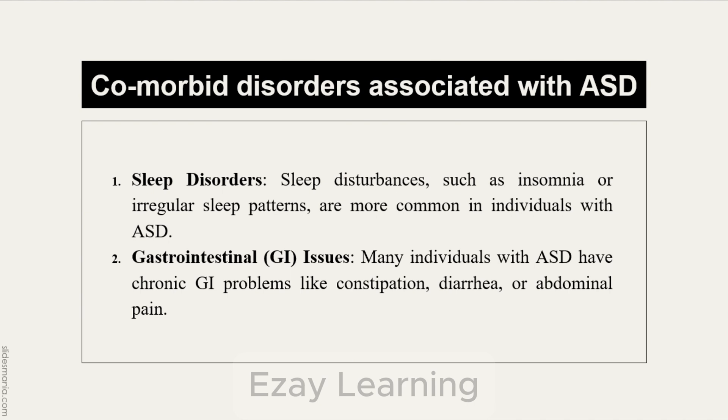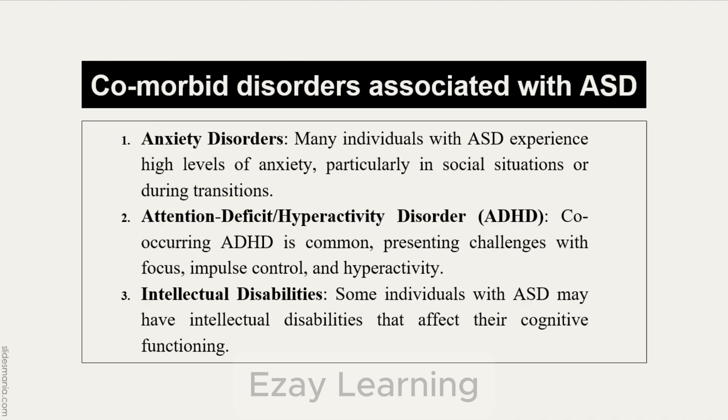You need to remember these names and then you can also differentiate by yourself. For example, for anxiety disorders, individuals with AST will also experience a high level of anxiety, especially in social situations or during transitions, because AST also involves issues with forming or maintaining relationships. So when there also exists a high level of anxiety, it might mean that anxiety disorders are co-occurring with AST.